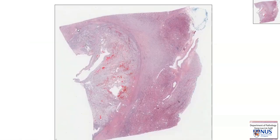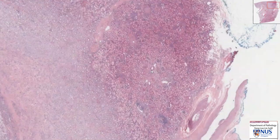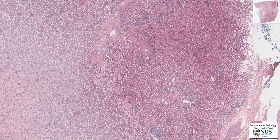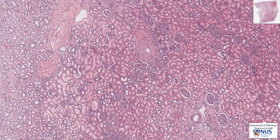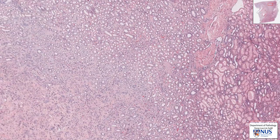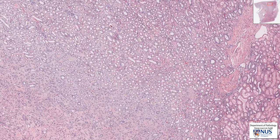This is a low magnification view. Here is the tumor, and here is the uninvolved non-neoplastic kidney. Just to recap a little bit on your histology, this is the renal cortex because we can see the glomeruli and some of the tubules here. The more obvious ones would be the proximal convoluted tubules with the rather pink-appearing epithelium. And this is the renal medulla with the collecting ducts.